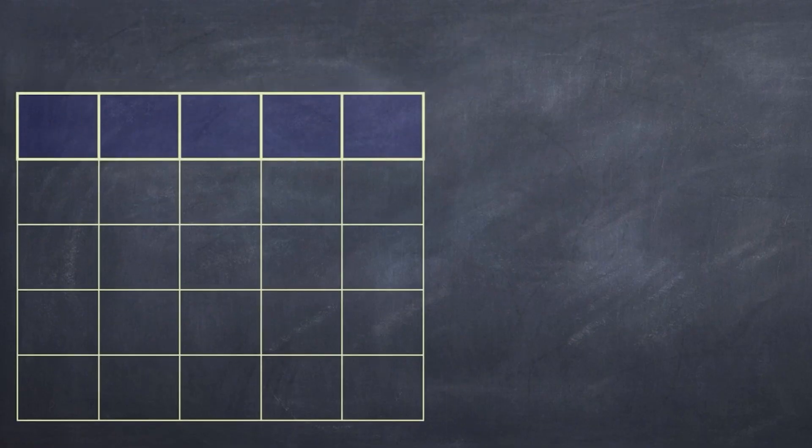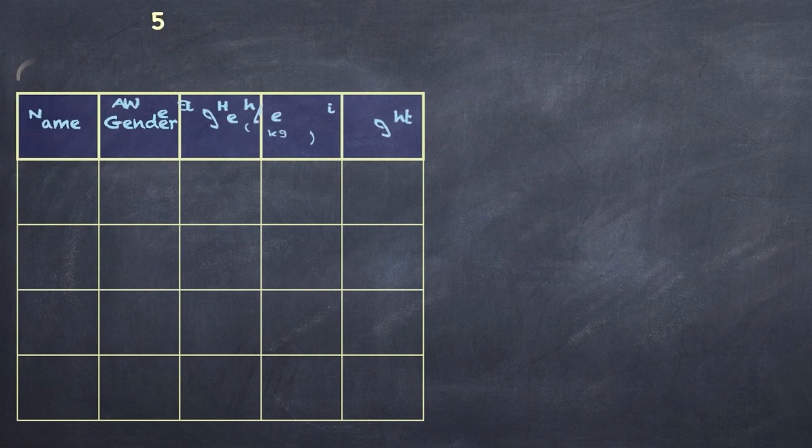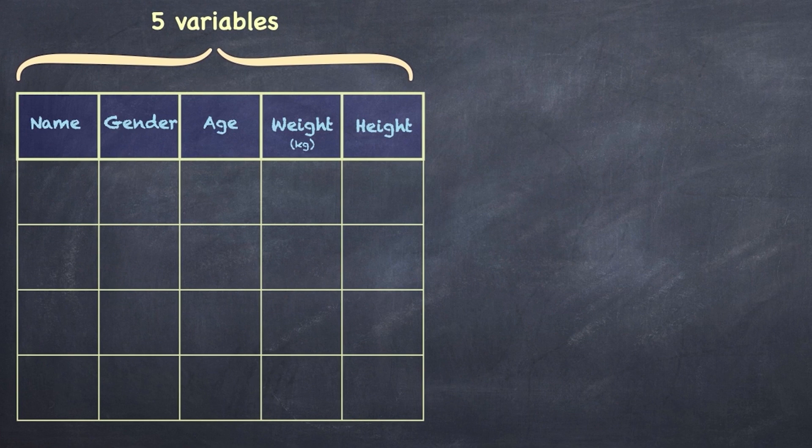In a typical data set, we've got something like a spreadsheet. In this spreadsheet we've got columns, and our columns are our variables. In this case we've got five variables, and our rows contain our observations.